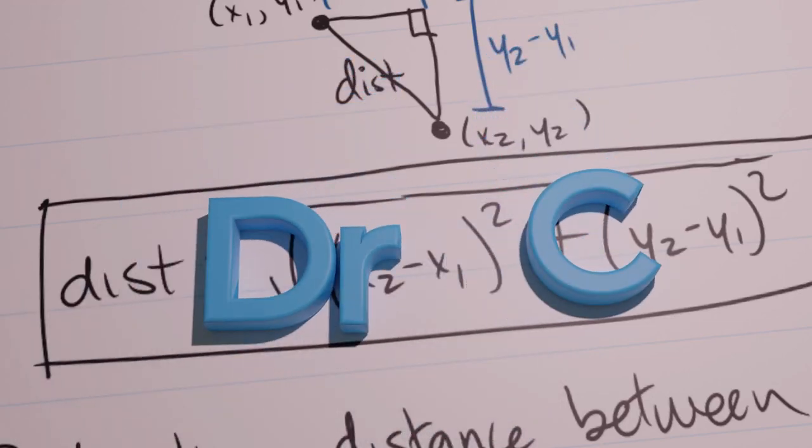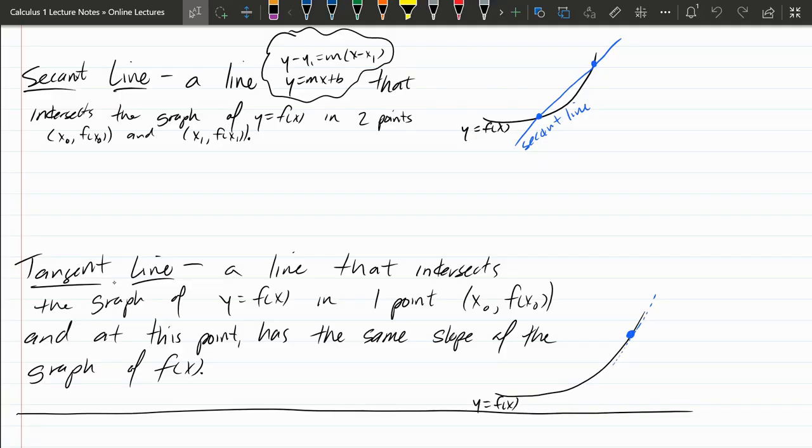We're going to look at secants and tangent lines. Now these are not to be confused with the secant and tangent trigonometric functions. These are almost always going to be followed by the word line. We'll look at secant line first.